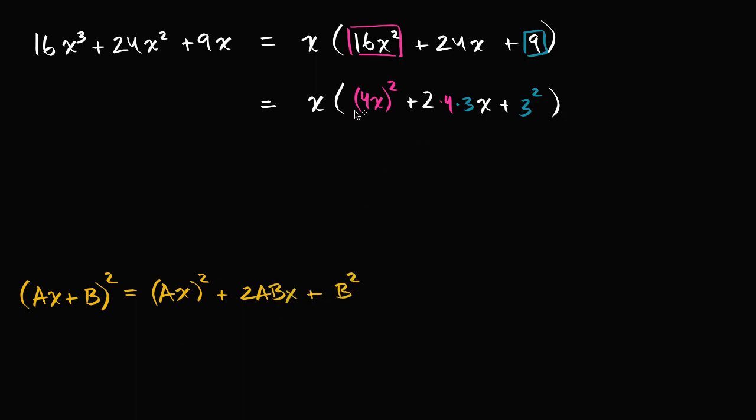And we have that form right over here. This is the ax squared, let me do the same color. The ax squared, ax squared. We have the b squared, you have the b squared. And then you have the 2abx, 2abx, right over there.